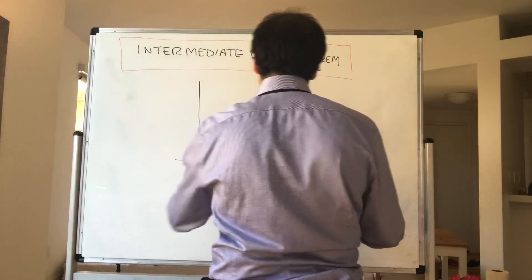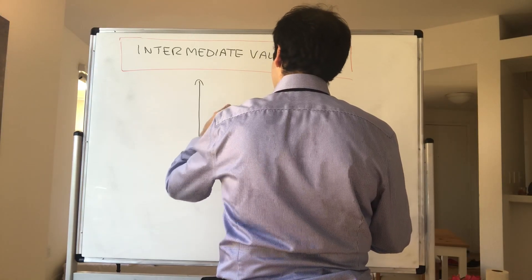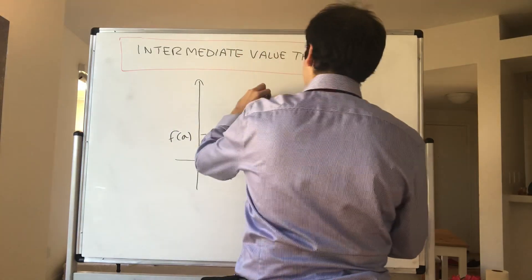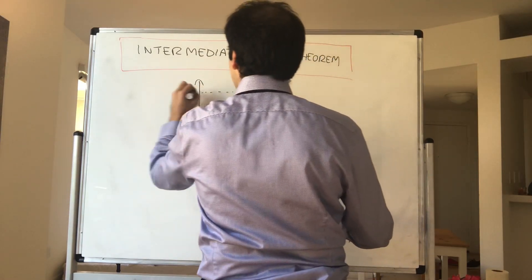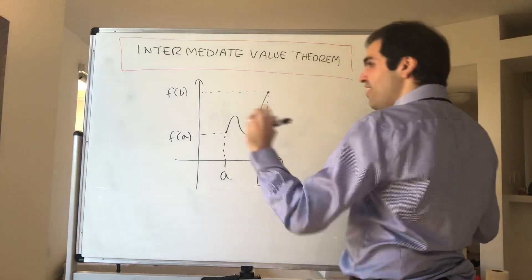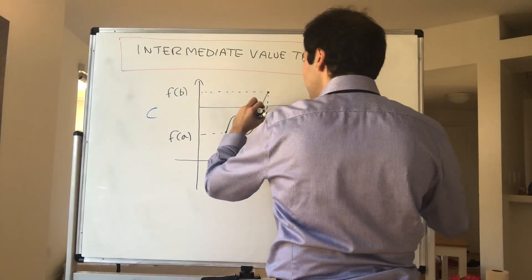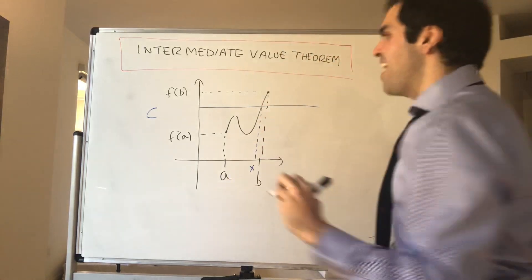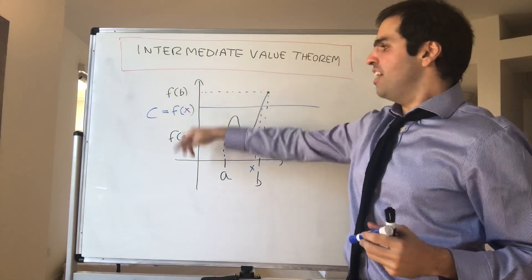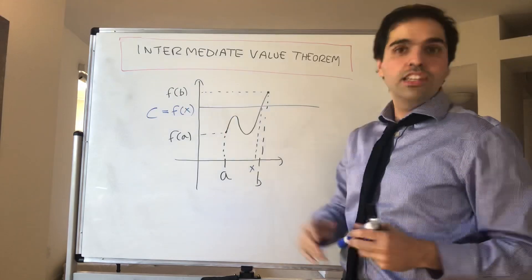So suppose you have a continuous function on [a, b], and suppose f maybe looks like that. So this is f of a and this is f of b. And if I give you any value c between f of a and f of b, then there must be some x such that f of x equals c. In other words, any value c between f of a and f of b must be attained by f — it must be in the range of f.